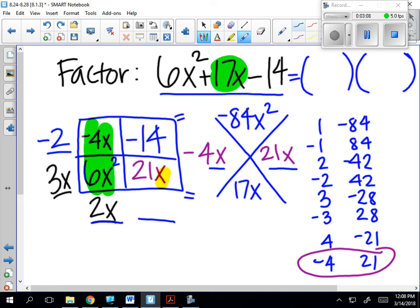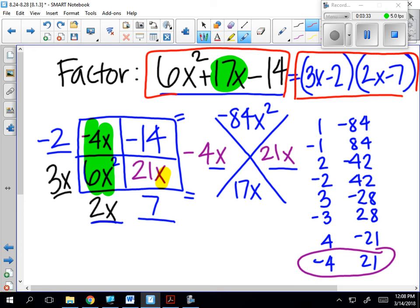So it's 2x times 3x minus 7, and I can check my work by multiplying these together using a blank generic rectangle and I should get back to my original answer of 6x² plus 17x minus 14. This is the standard form and this is the factored form of my quadratic.